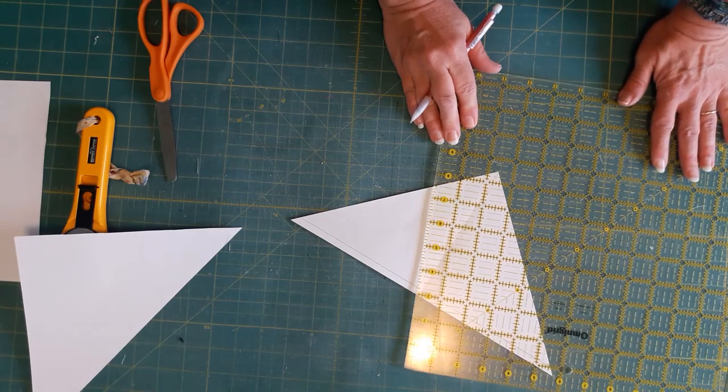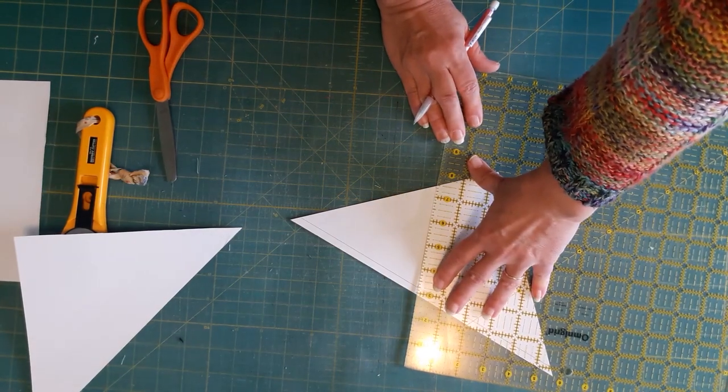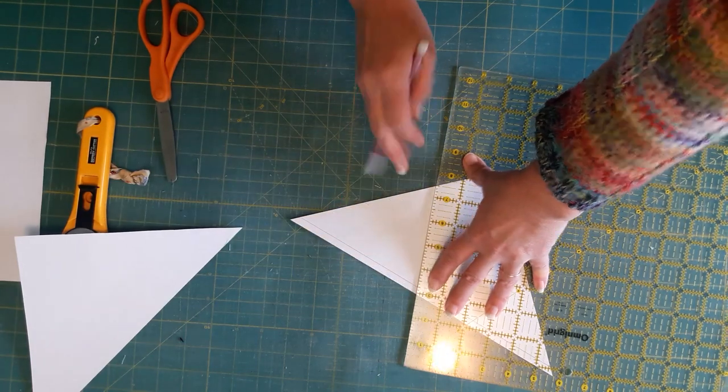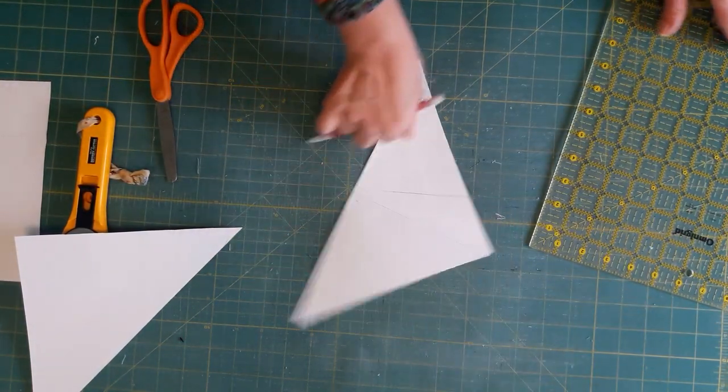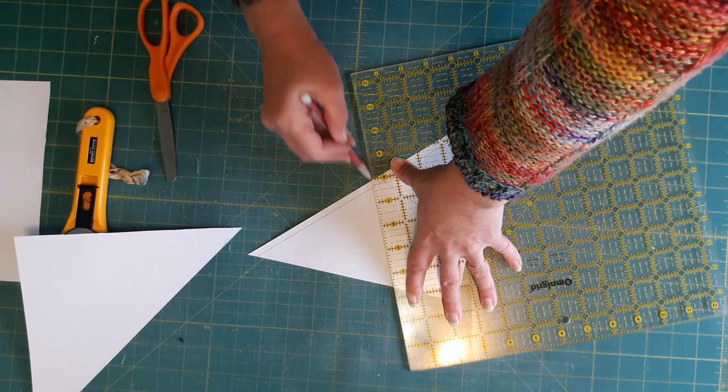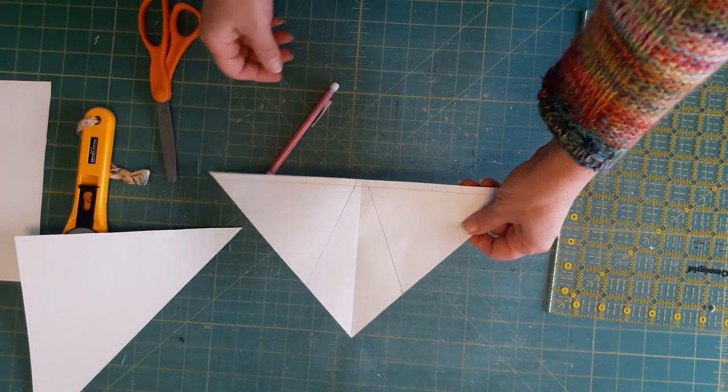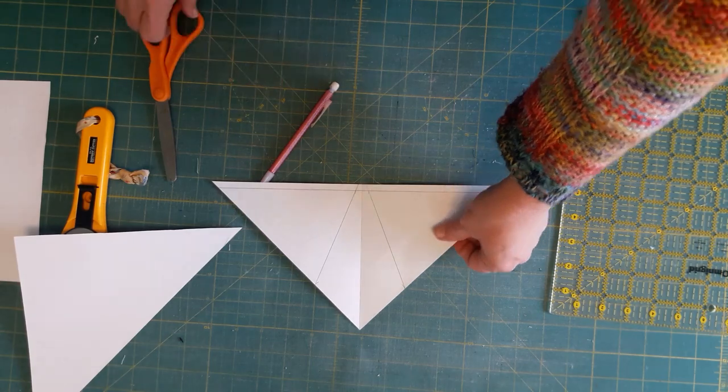Then those little marks I made, I'm just going to line them up and draw a line. And that is my kite piece. I'm going to cut that out.